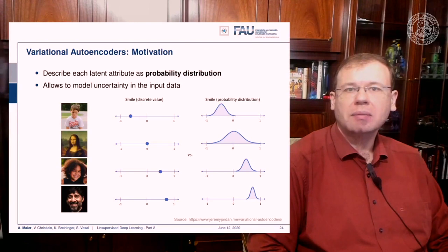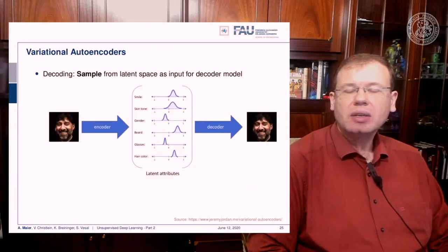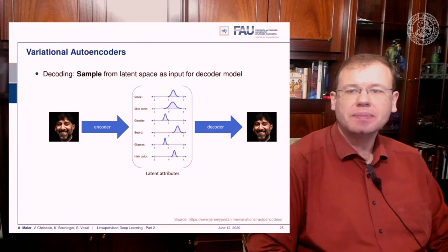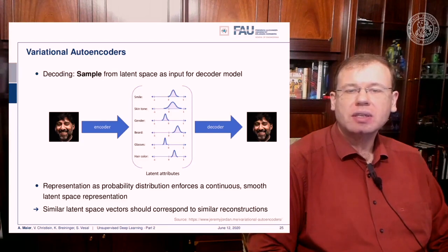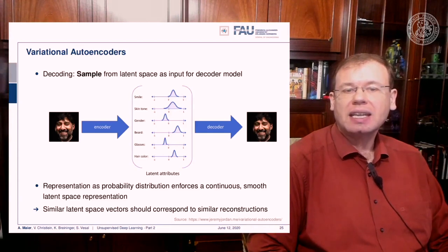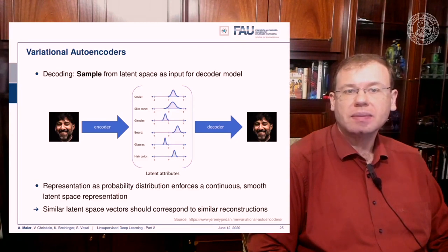So we can see we're not sure whether this is a smile or not, and then we have very clear instances of smiling, and then of course the distribution has a much lower standard deviation. So how would this work then? Well, you have some encoder that maps your input onto the latent attributes, and the decoder is then sampling this distribution in order to produce the final output. So this means that we have the representation as a probability distribution that enforces a continuous smooth latent space representation, and similar latent space vectors should correspond to similar reconstructions.